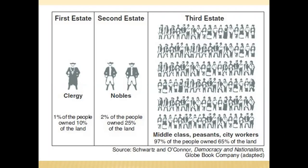The political makeup of France during this time is broken into thirds, and these thirds are called the estates. As you can see with this chart, the clergy is the first estate, the second estate is the nobility which includes the king, and then there's the third estate, which is everybody else — 97% of the population. They owned about 65% of the land, including middle class, lower class, and the poorest of the poor.